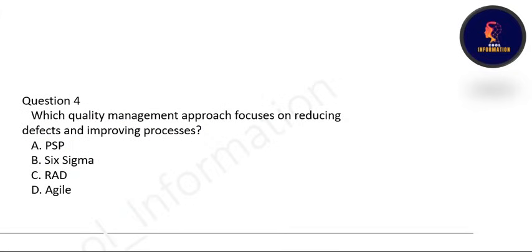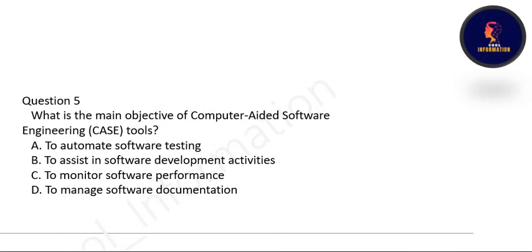Next question: which quality management approach focuses on reducing defects and improving processes? Correct option is B — the Six Sigma approach is used for that. Next: what is the main objective of computer-aided software engineering CASE tools? The main objective is to assist in software development activities. Option B is correct.